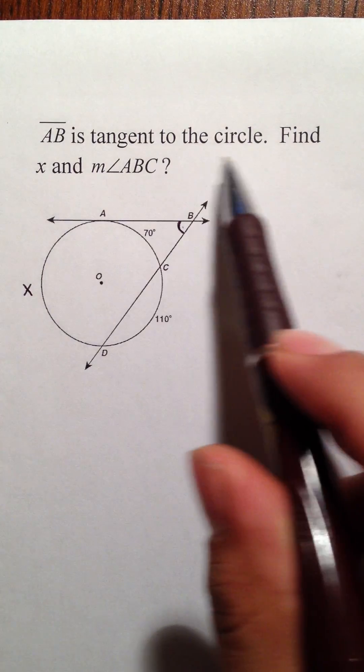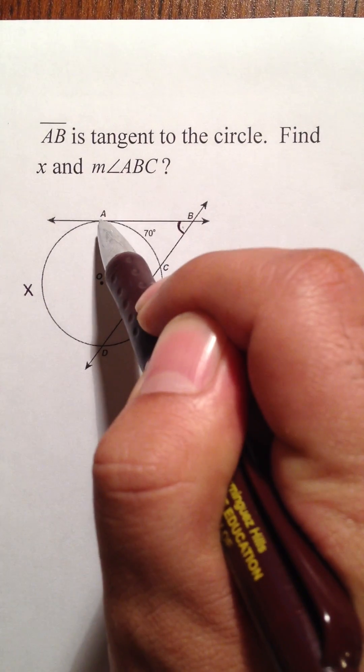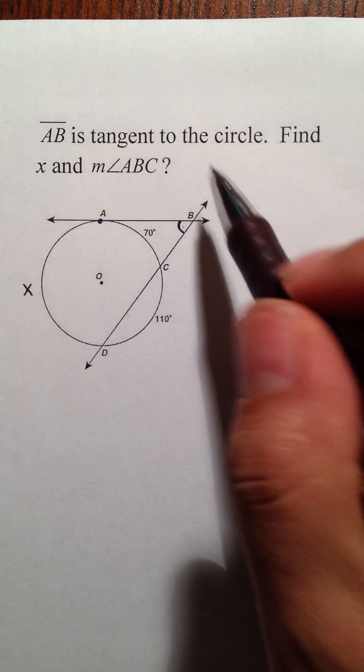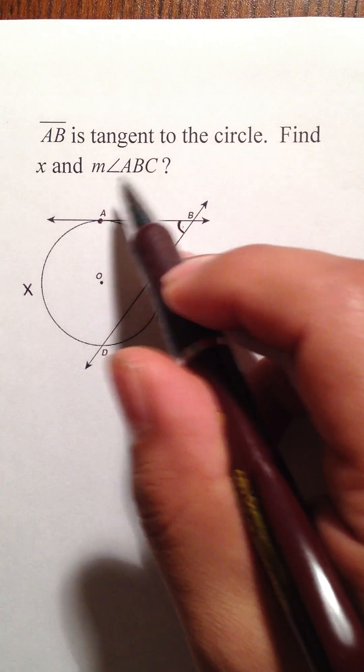The first information they give us is that AB is tangent, which means it only touches at one point, point A. Then they want you to find X and this.